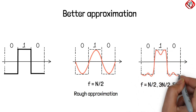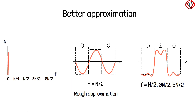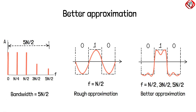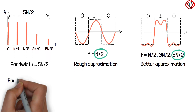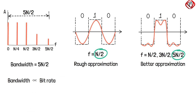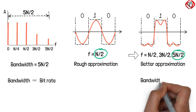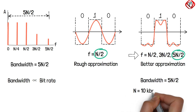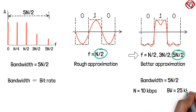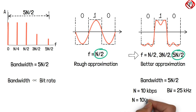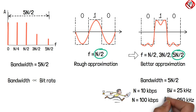Using more harmonics better approximates the digital signal. If we check this in the frequency domain, we can find that the better approximation has increased the bandwidth — from n/2 to 5n/2. We can also point out that bandwidth is directly proportional to the bit rate in baseband transmission. Suppose we are using the first 3 harmonics to approximate a digital signal, so the bandwidth is 5n/2. If the bit rate is 10 kbps, then the bandwidth is 25 kHz. If the bit rate is 100 kbps, then the bandwidth is 250 kHz. That is, to send bits faster, we have to increase the bandwidth.